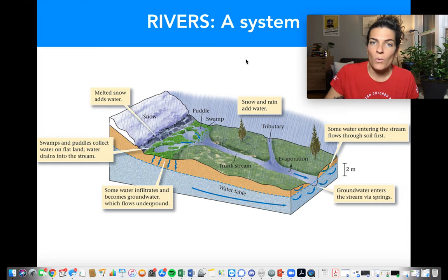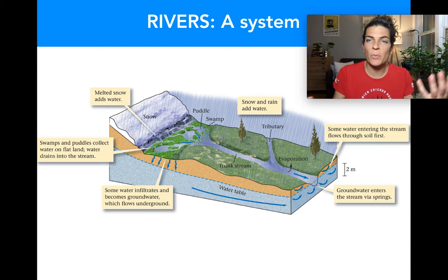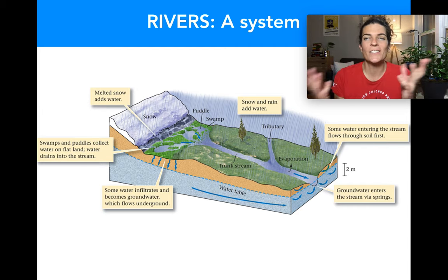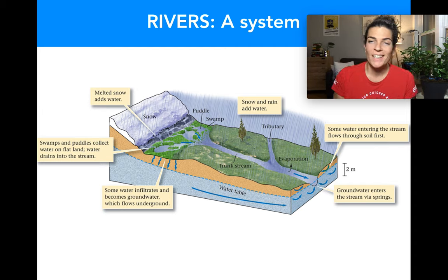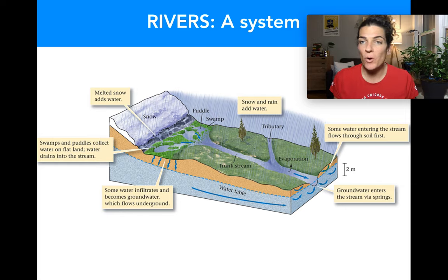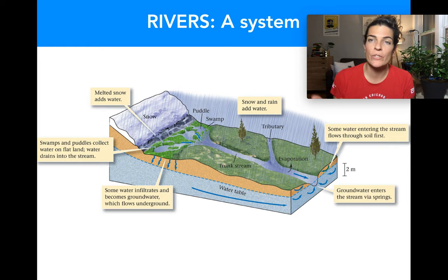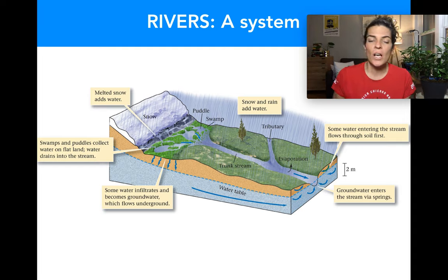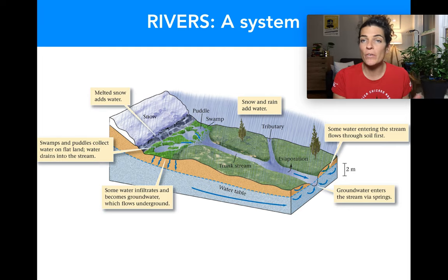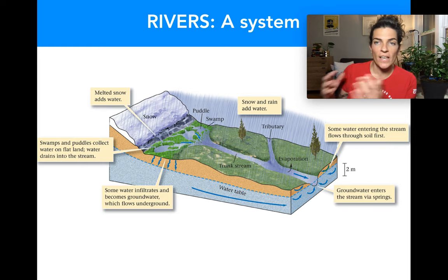We'll start by talking about fresh water, specifically rivers, then lakes, groundwater, and the next lecture will cover oceans. Rivers are one of the most visible forms of fresh water. They have been hugely important throughout human history — not just as drinking water sources, but as modes of transportation for trading goods, and for fishing and hunting. Rivers have a deeply historical connection with the human experience.